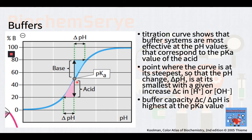The titration curve shown here shows that buffer systems are most effective at the pH values that correspond to the pKa value of the acid. To recall, pKa is the negative log of the acid dissociation constant or Ka value. A lower pKa value indicates a stronger acid. This is where the curve is at its steepest, so that the pH change, or delta pH, is at its smallest with a given increase or delta c in hydrogen positive ion or OH negative ion. In other words, the buffer capacity, delta c over delta pH, is highest at the pKa value.